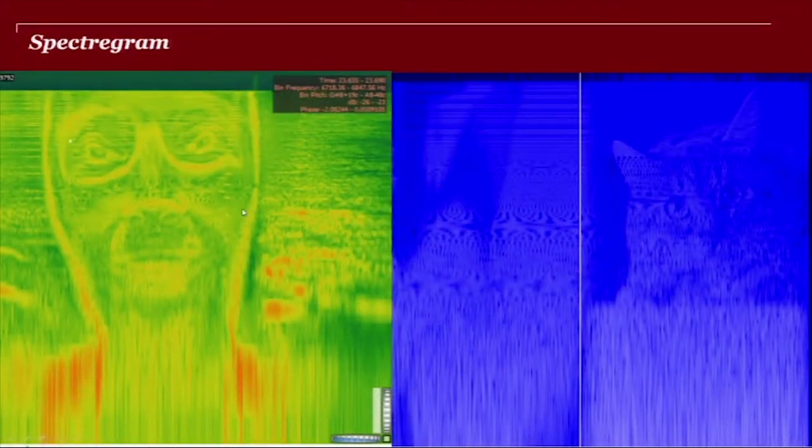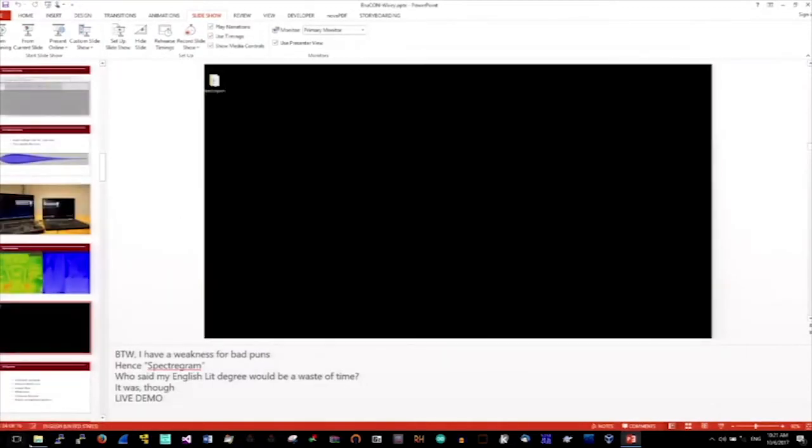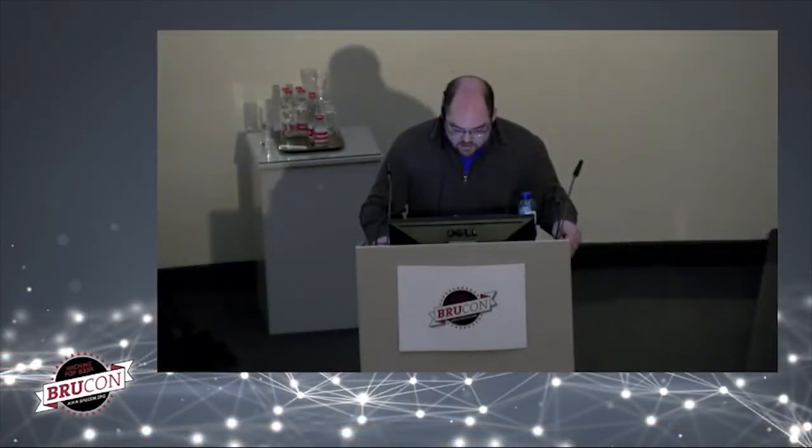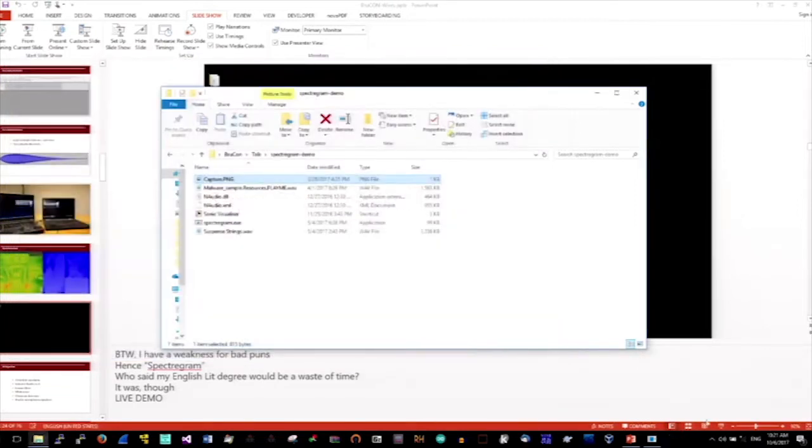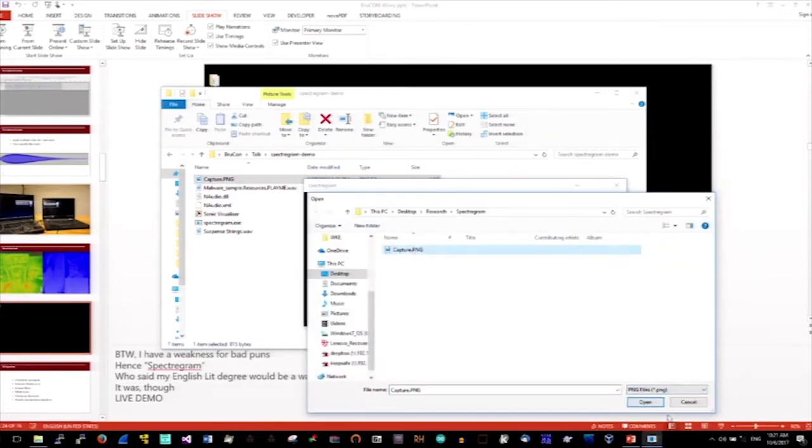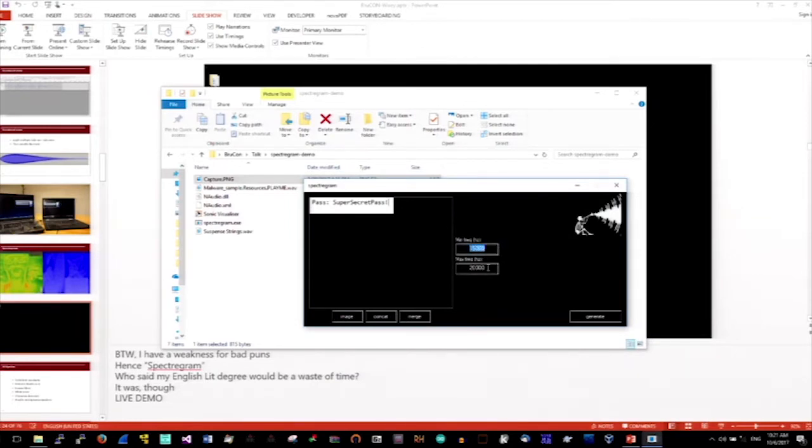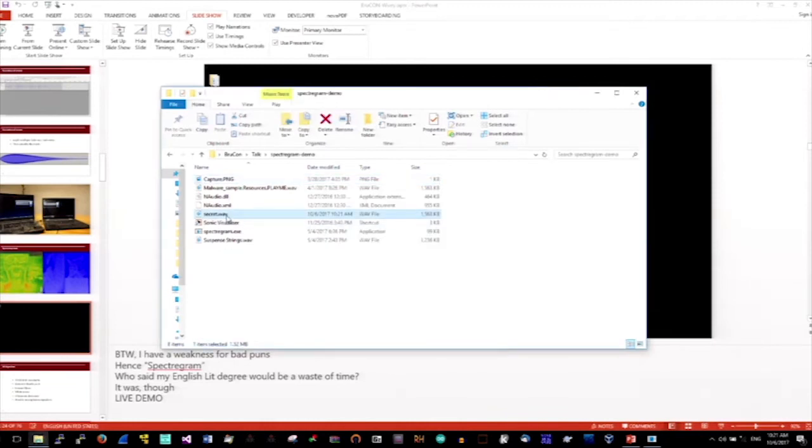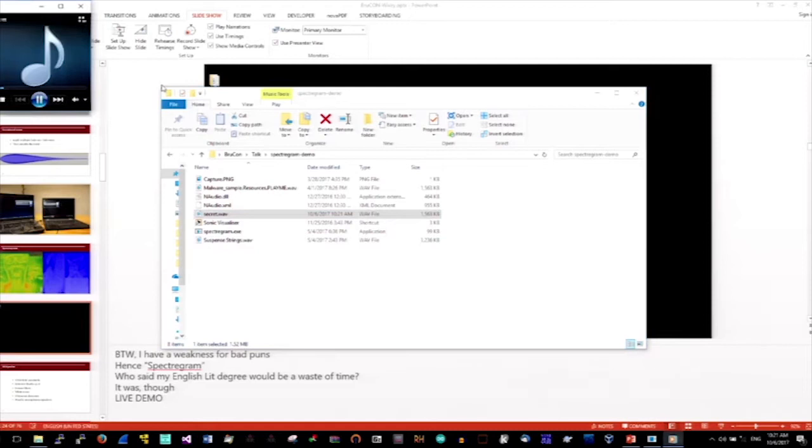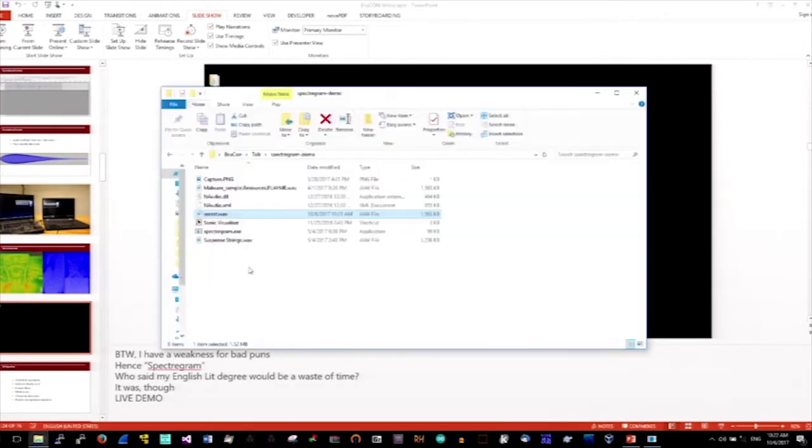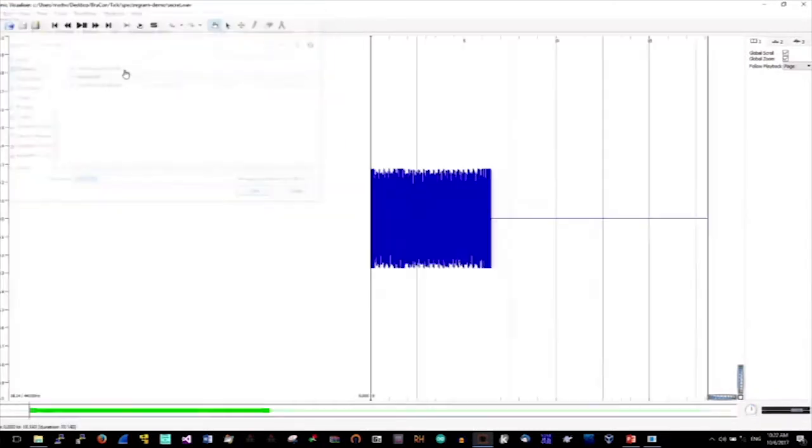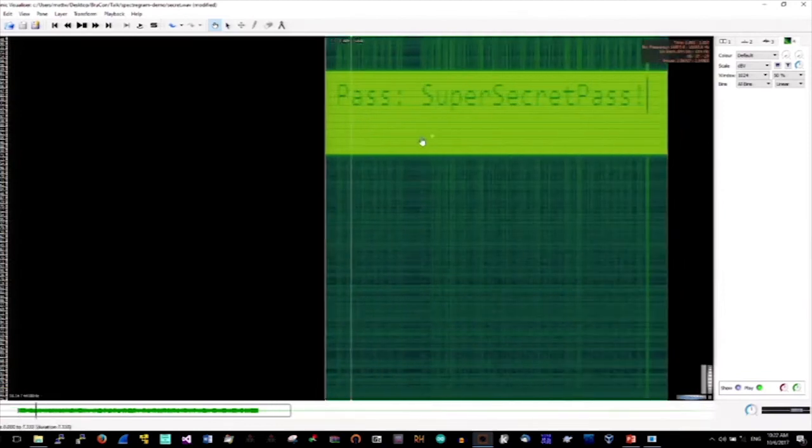So I built a tool that did the same thing. I'll try a live demo. So this is the tool. And let's say I've got an image that I want to exfiltrate. So in this case, it's just a screenshot of a password. So what I do with my tool is read that in, specify a minimum and maximum frequency. So in this case, I'm sticking with mostly near ultrasonic tones. If I hit generate, that writes me out a wave file. Now, if I play this wave file... Can anyone hear that? A few people, right. Now, if I view that audio track in a spectrogram, I can then recover that image.